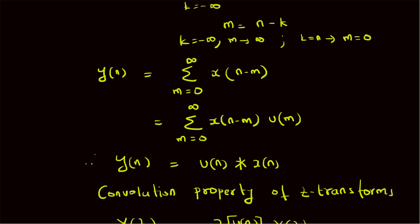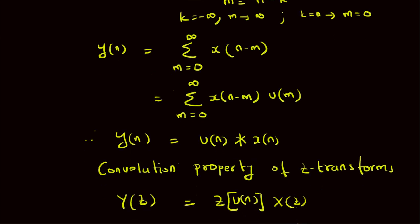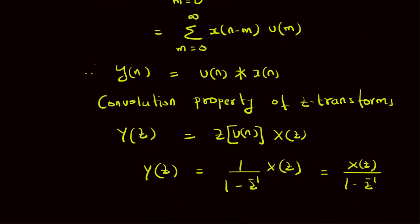When we look at this summation, it is basically convolution between u(n) and x(n). Next, using the convolution property of the Z-transform, the output Z-transform Y(z) equals the product of the Z-transform of u(n) and the Z-transform of the input X(z). Therefore, the output Y(z) is X(z) / (1 - z⁻¹). Thanks for watching.